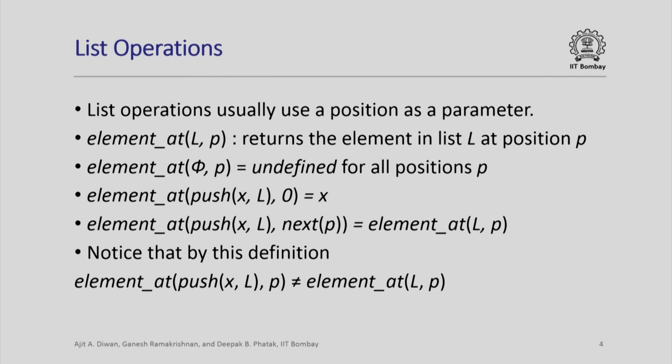Here is an example of an operation which finds the element in the list l at position p. We call this operation element_at — l is a list and p is a position — and this returns the element in list l which occurs at position p. If the list is empty then there is no element at any position, so element_at of empty list at position p is undefined for all positions p. If the list is nonempty and obtained by pushing an element x in some list l, then the element at position 0 is just x itself. Otherwise, if the position is next of p for some position p, then the element at position next(p) in the list push(x, l) is the element in list l at position p.